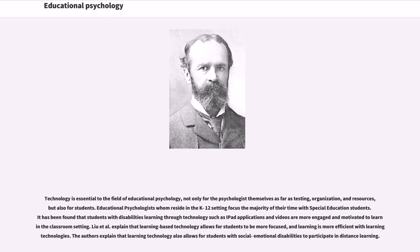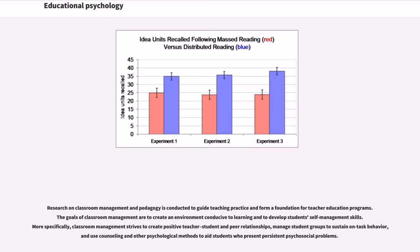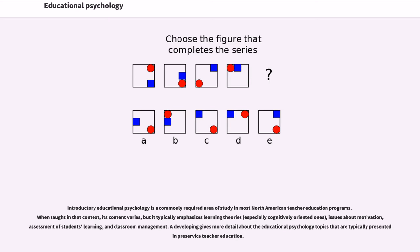Research on classroom management and pedagogy is conducted to guide teaching practice and form a foundation for teacher education programs. The goals of classroom management are to create an environment conducive to learning and to develop students' self-management skills. More specifically, classroom management strives to create positive teacher-student and peer relationships, manage student groups to sustain on-task behavior, and use counseling and other psychological methods to aid students with persistent psychosocial problems. Introductory educational psychology is a commonly required area of study in most North American teacher education programs, typically emphasizing learning theories, motivation, assessment, and classroom management.